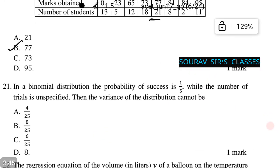We have a binomial distribution with the probability of success 1 by 5, while the number of trials is unspecified. Now, we need to calculate the variance of the distribution.